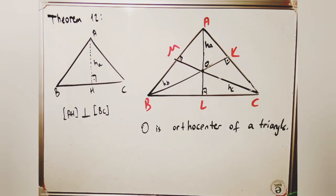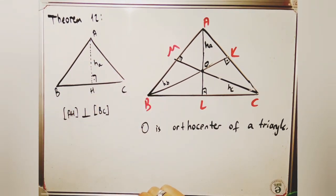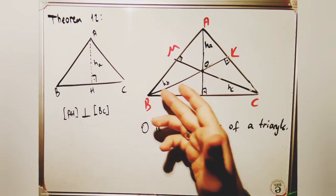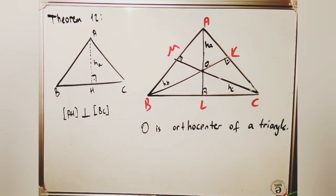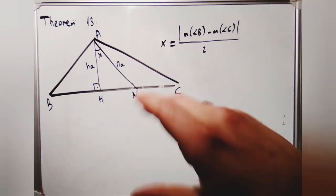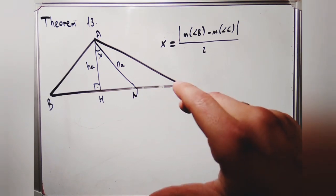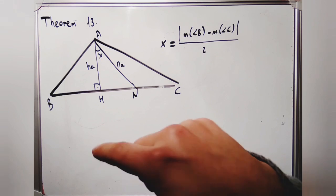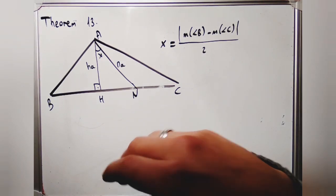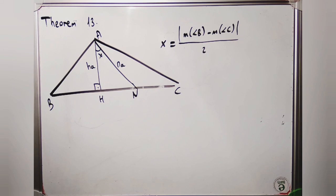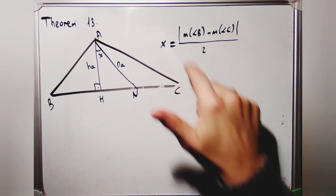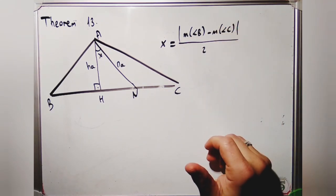Theorem 12: In a triangle, the length of an altitude is called the height. AH is perpendicular to BC. If we take the other heights from B and C, their intersection point is called the orthocenter, point O. Theorem 13: The measure of the angle formed by the altitude and the angle bisector from the same vertex equals half the absolute value of the difference of the other two angles: x = |angle B − angle C| / 2.